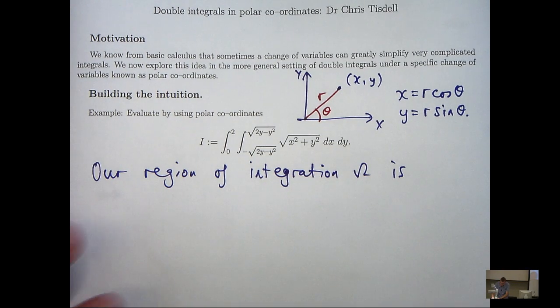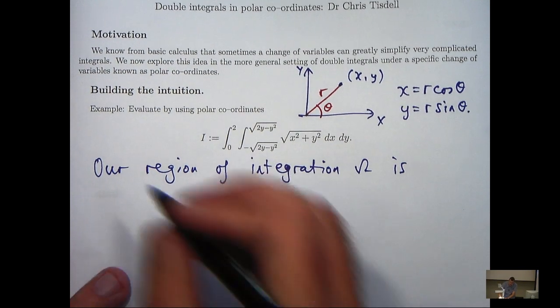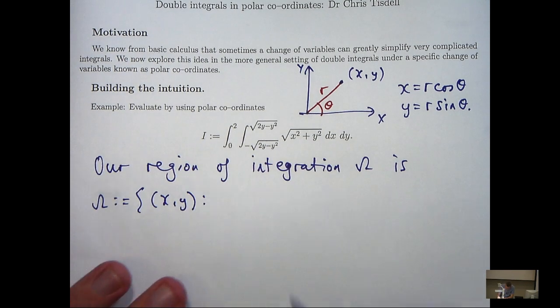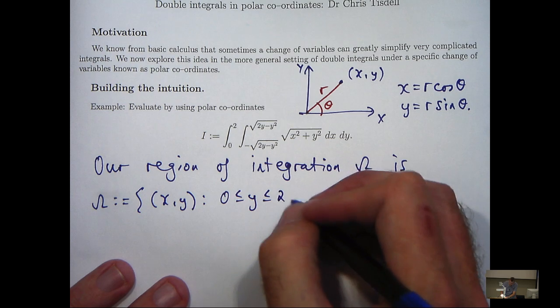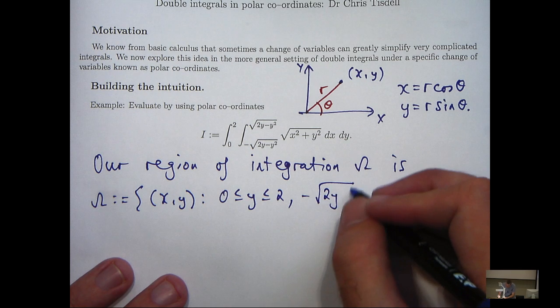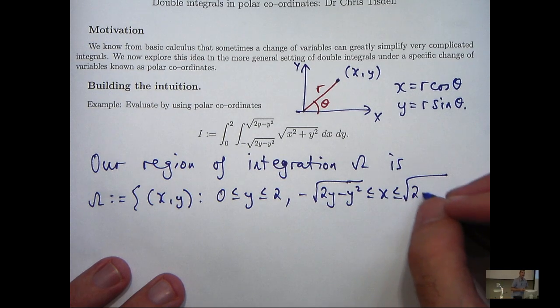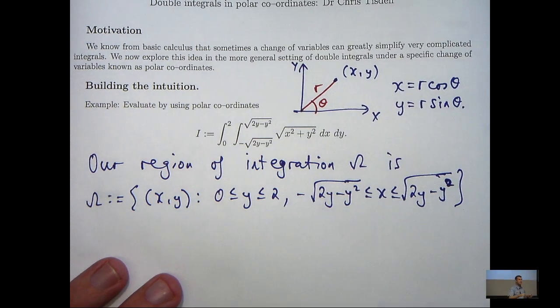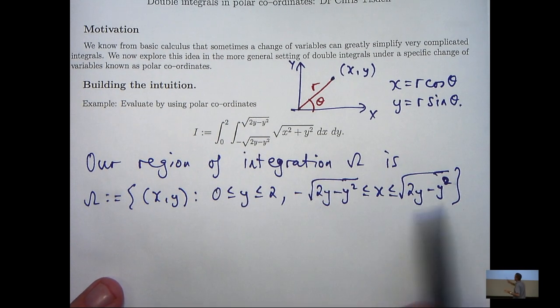So I'm going to denote the region of integration by omega. And I can see from the upper and lower limits that in Cartesian coordinates, our omega is all those x,y where y is between 0 and 2, and x is between these two functions of y. So the first question is, what does this region actually represent?